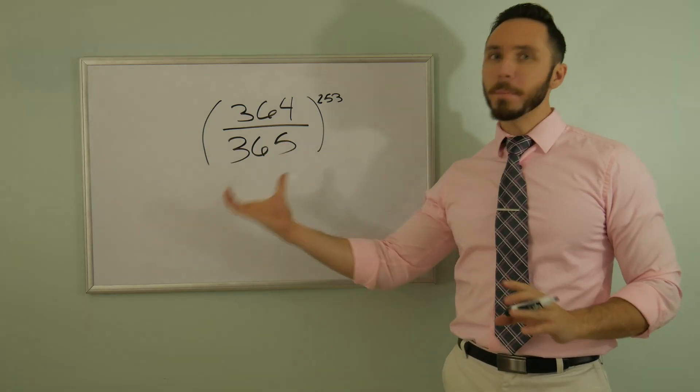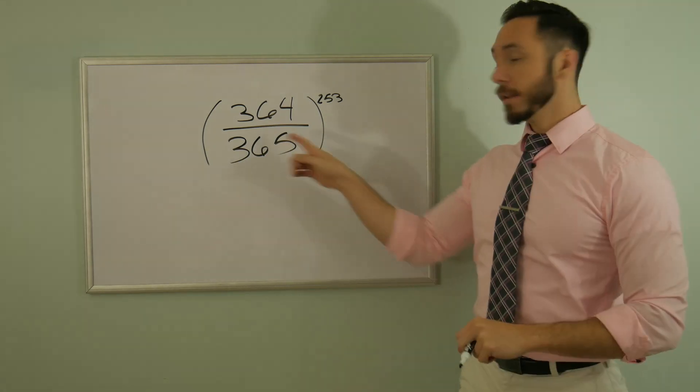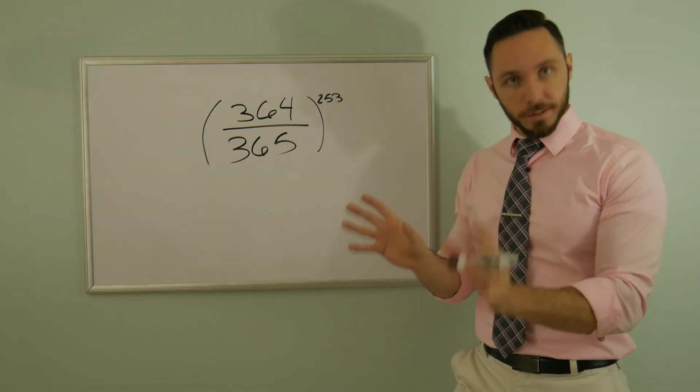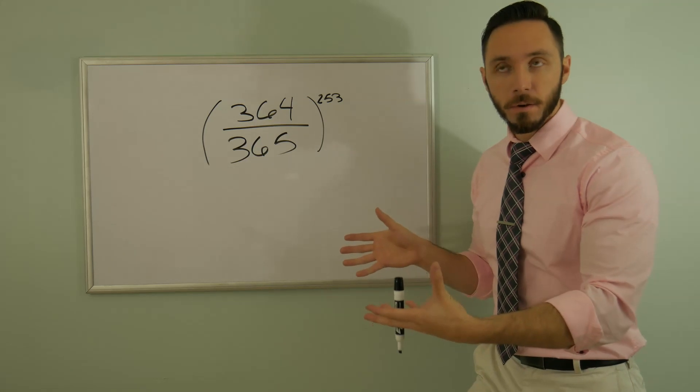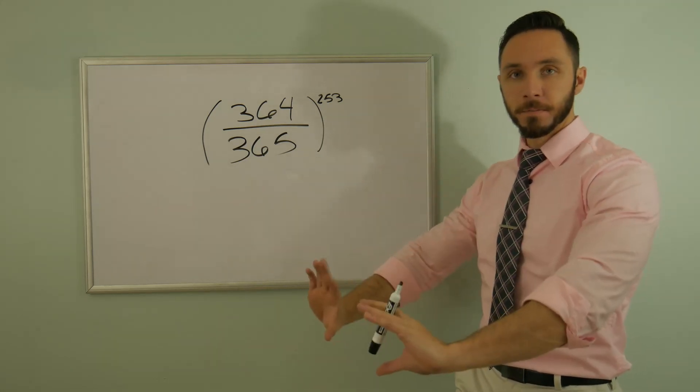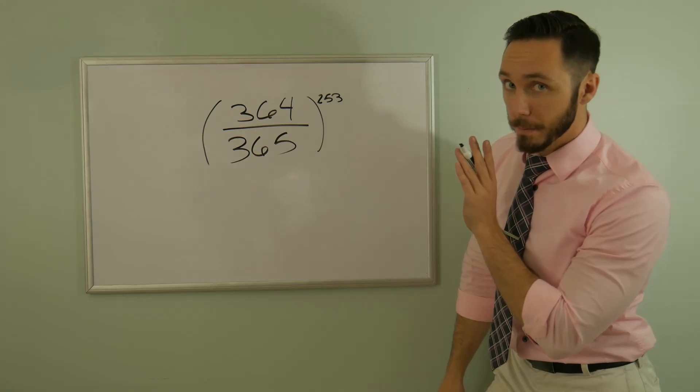What did this probability represent in the first place? Well, this represented the number of people that do not have the same birthday. So this value is going to get you the not. So how do I find the actual? This is otherwise known as a complement in probability.